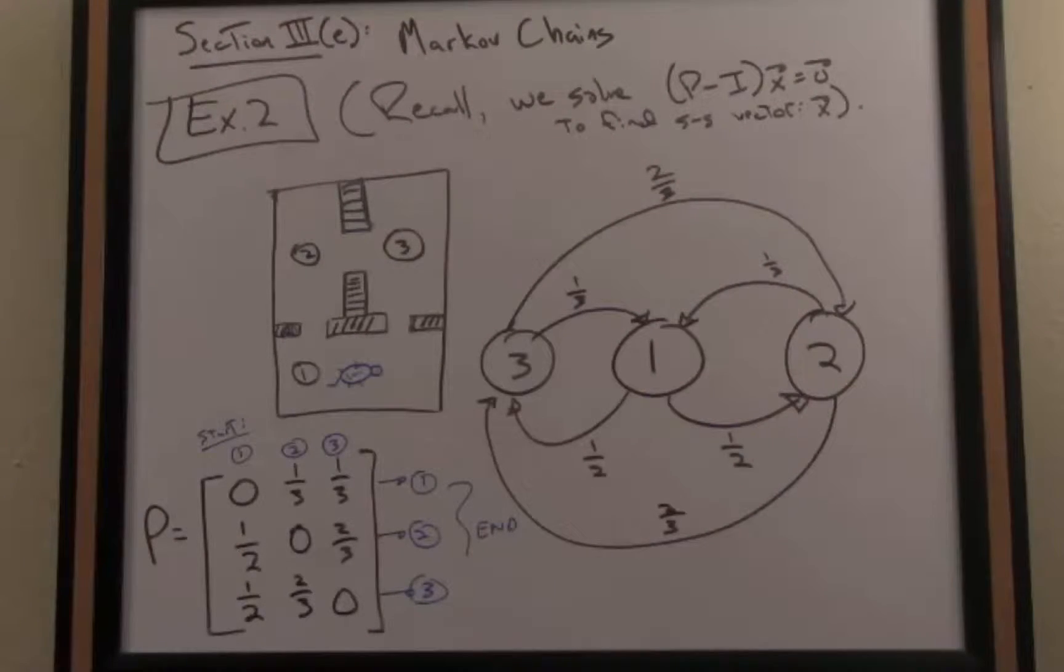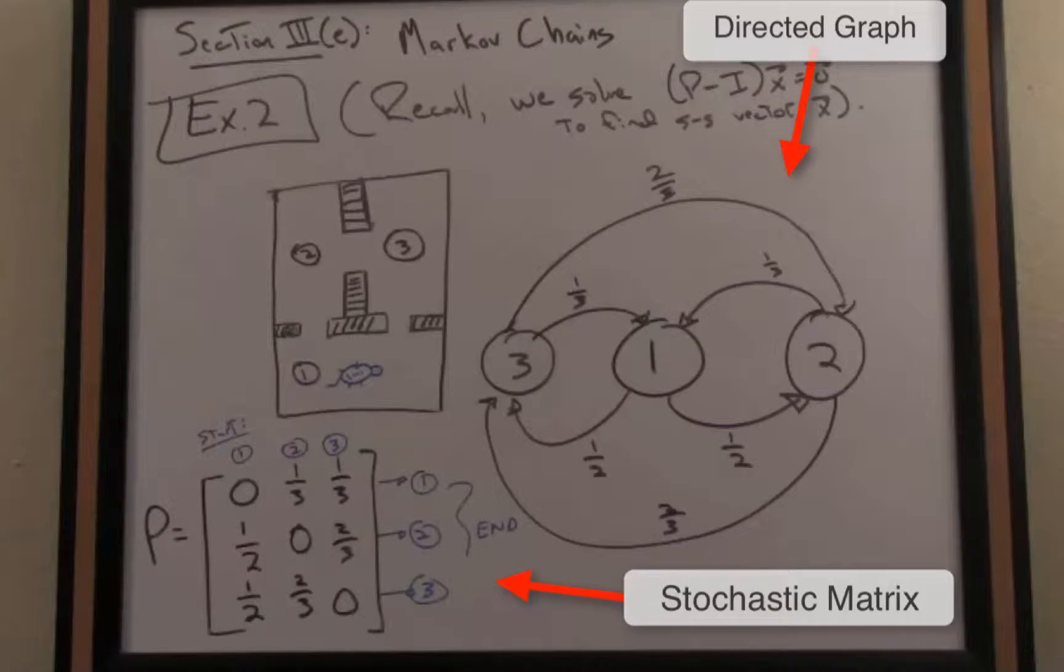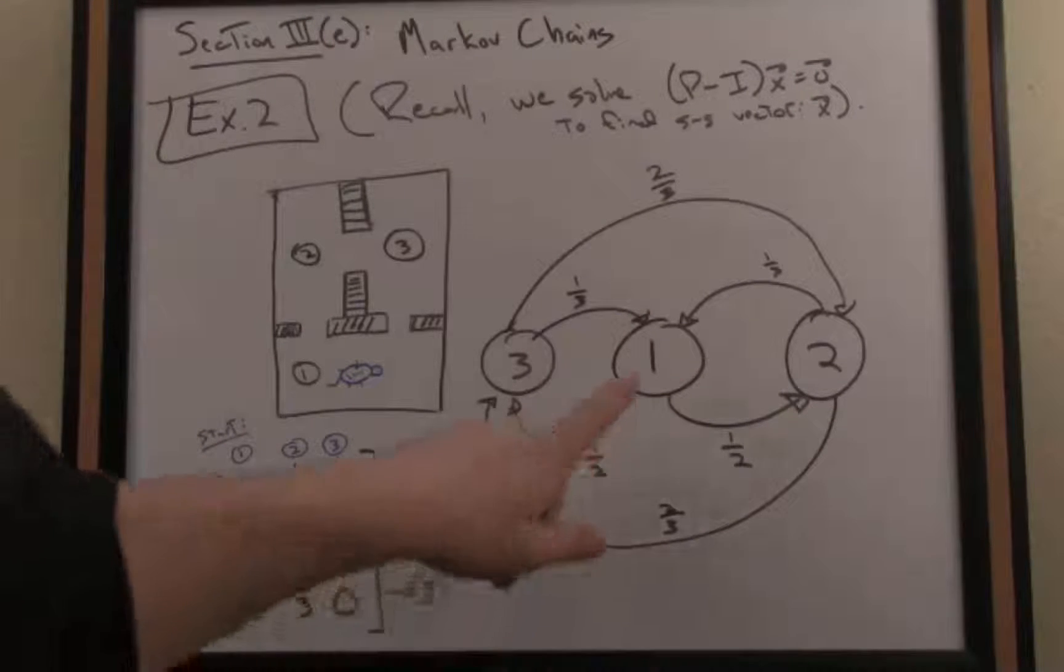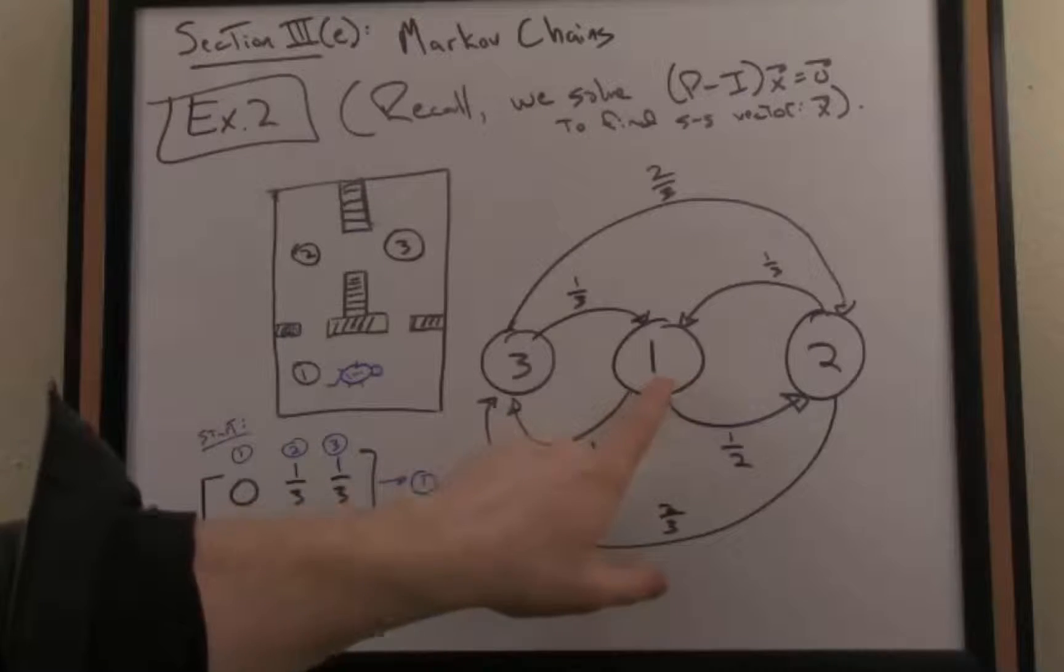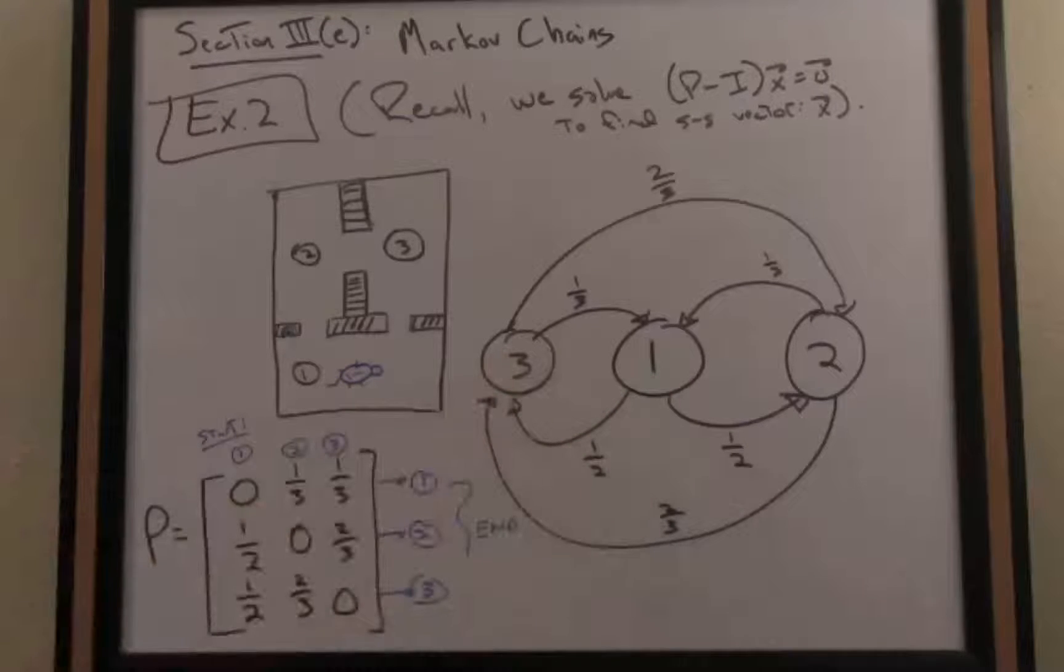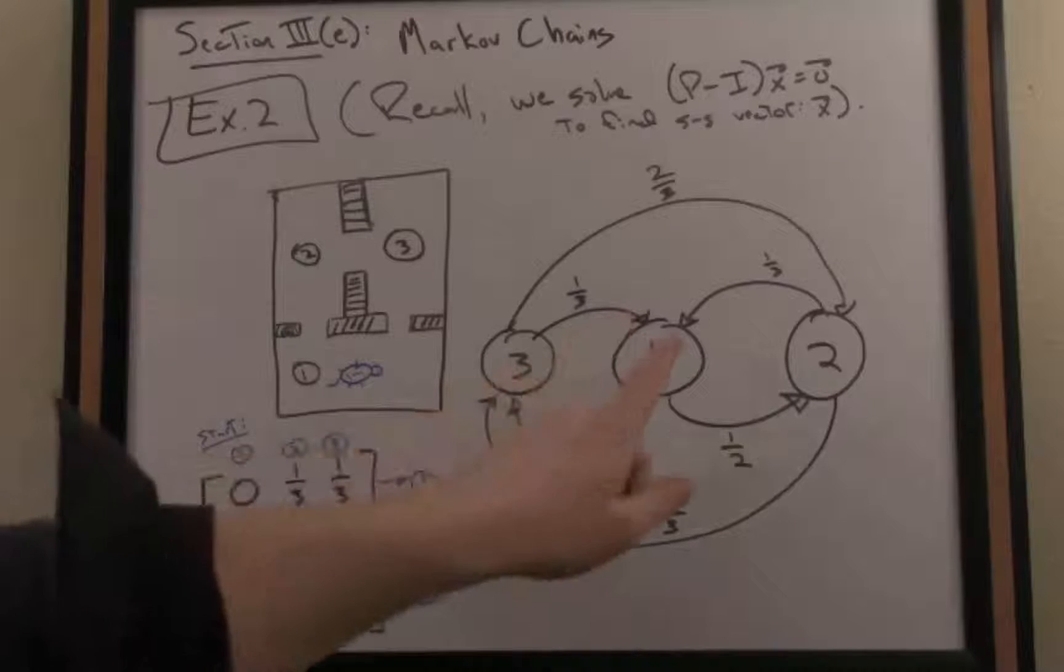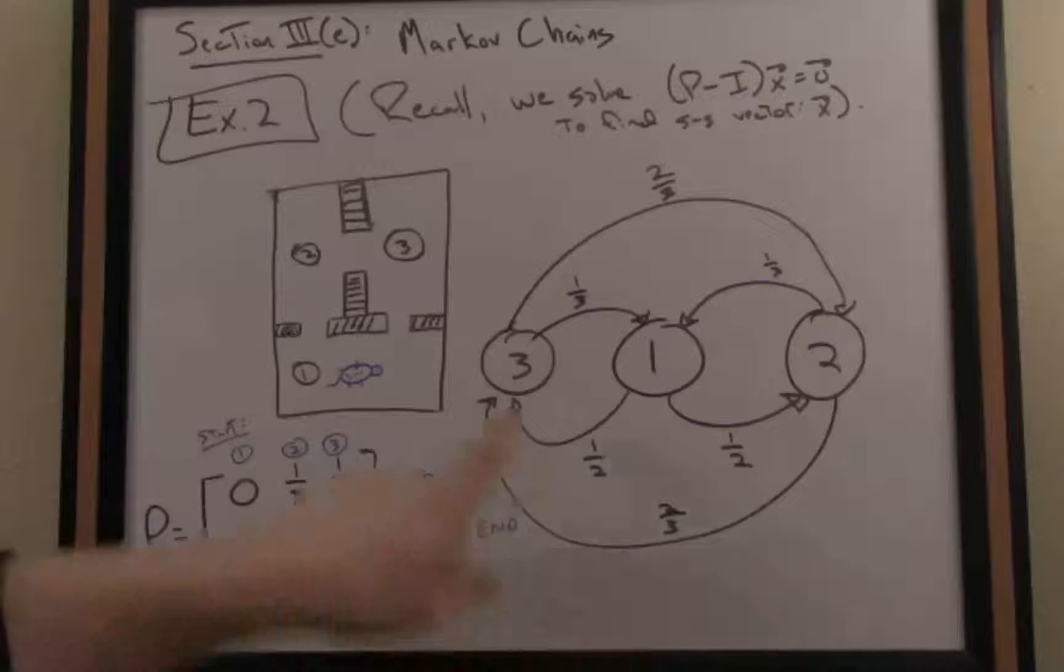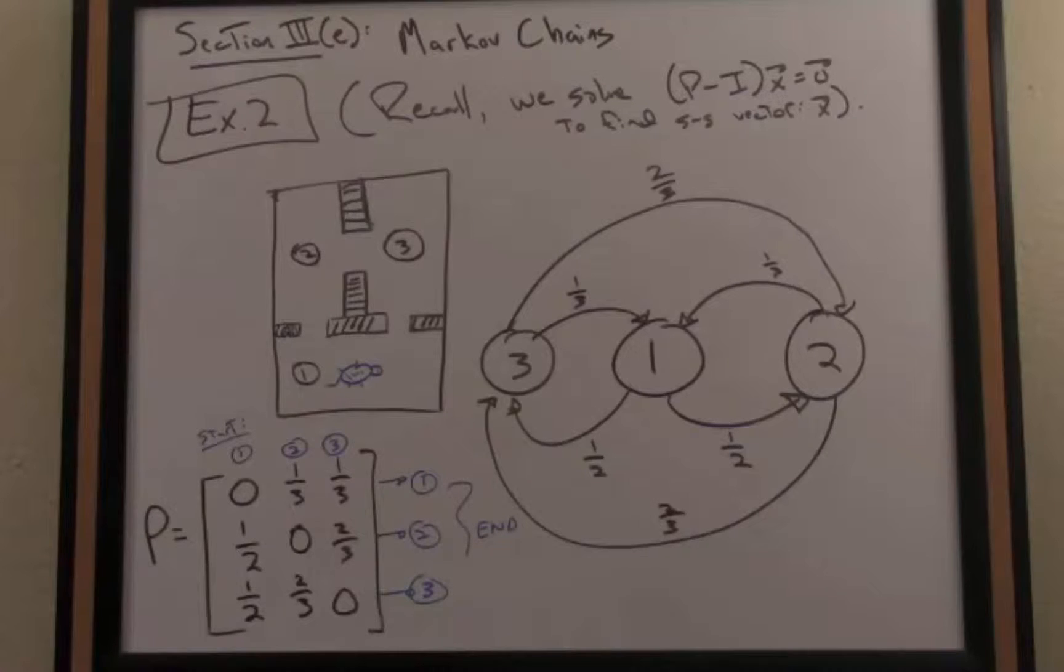I've drawn the directed graph and the corresponding stochastic matrix for this example. You'll notice a few things. For one, I haven't allowed the mouse to remain stationary from step to step, so it always moves. You can see that in our directed graph, if it's in room one currently, there's probability one-half it moves to room three, and similarly probability one-half it moves to room two, so zero probability it remains still.